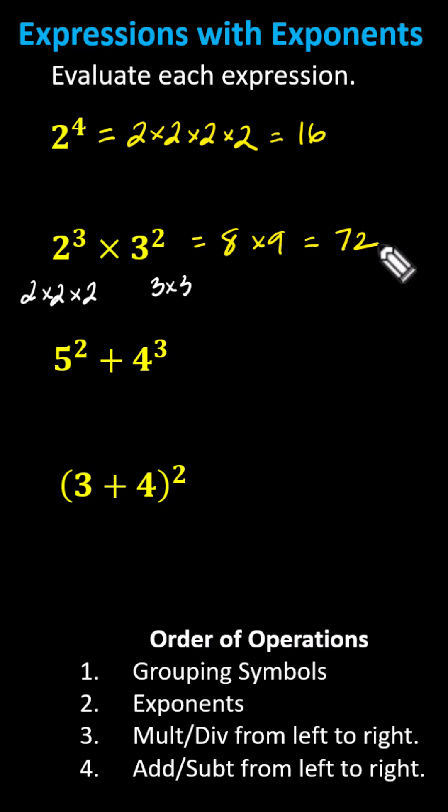Next, we have 5^2 + 4^3. Again, the first step is to evaluate the exponents. 5^2 equals 5×5 = 25, and 4^3 equals 4×4×4 = 64. The expression simplifies to 25 + 64 = 89.